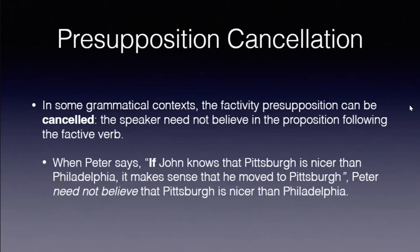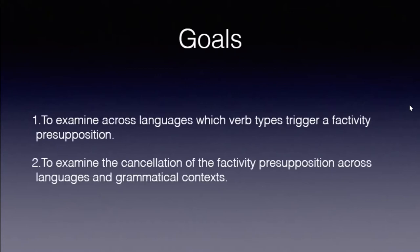An interesting fact about formal semantics is that researchers do a lot of formal work without getting any empirical data at all — a huge amount of theoretical work with a very thin empirical basis. Our goal was to examine across languages which verb types trigger factivity presuppositions. There are actually only a handful — three or four — cross-linguistic papers on these questions in the literature before us. We also aimed to examine the cancellation of these presuppositions across grammatical contexts.